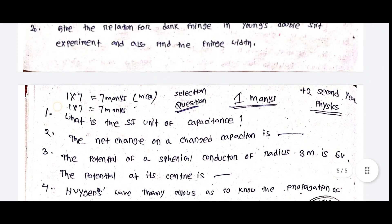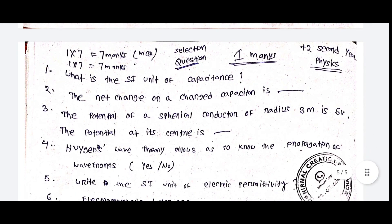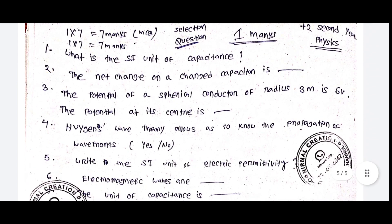You have been asked all the selection questions for math and physics in this video. In the next video, you will have the selection questions for chemistry, biology, English, and MI — for science or commerce. If you want to know more, please like this video and subscribe to our channel.